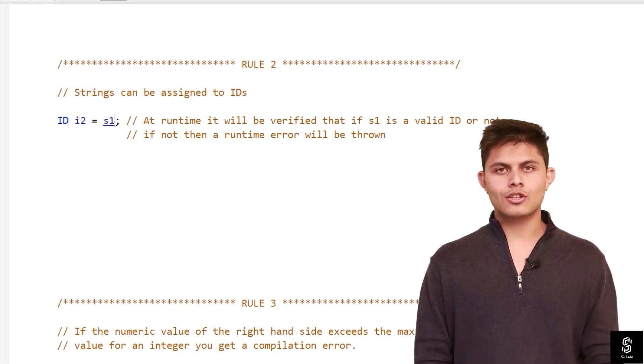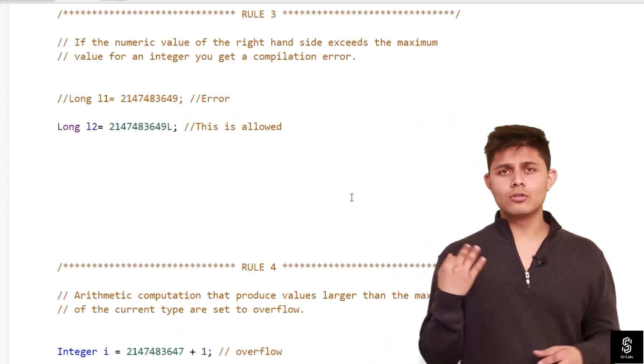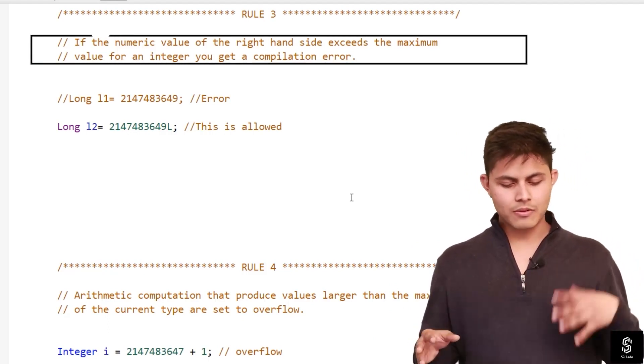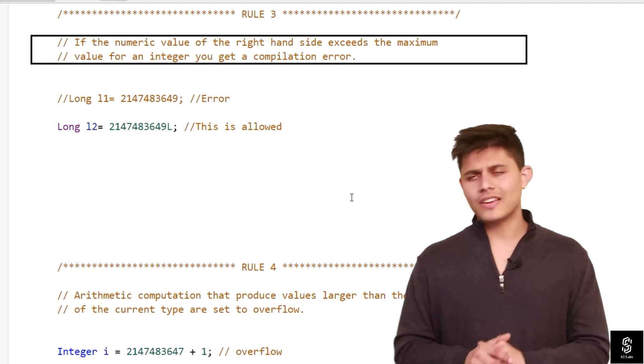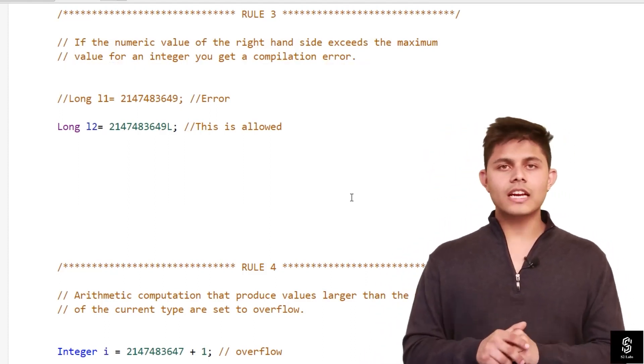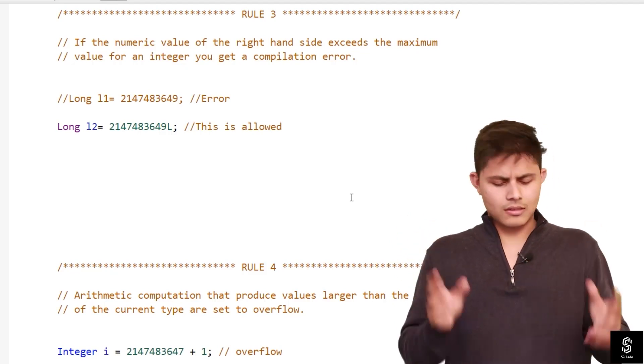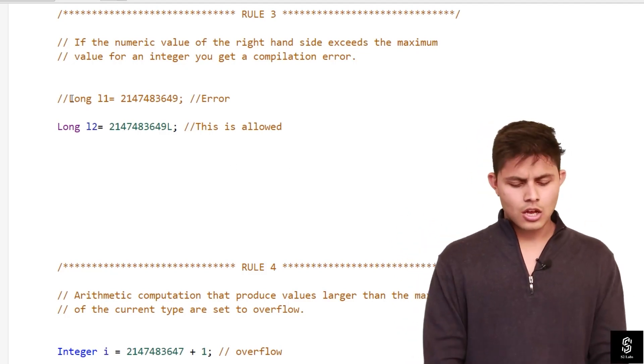The next rule that we've got is rule 3. If the numeric value of the right-hand side exceeds the maximum value for an integer, you get a compilation error. It's very simple. If you're trying to store a value on the right, let's take the example: this long l1